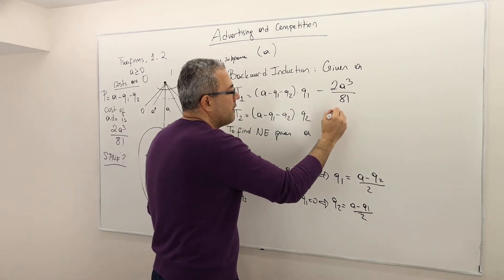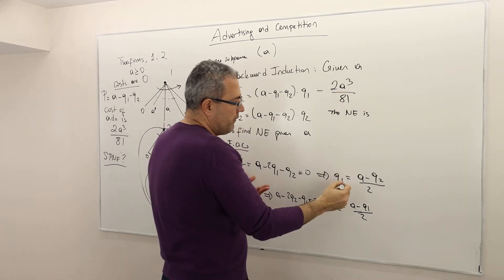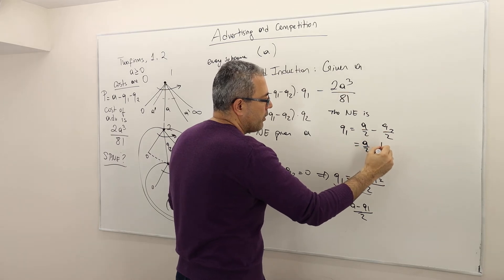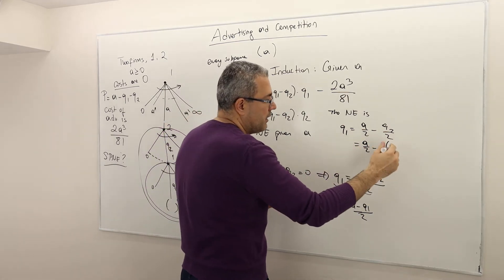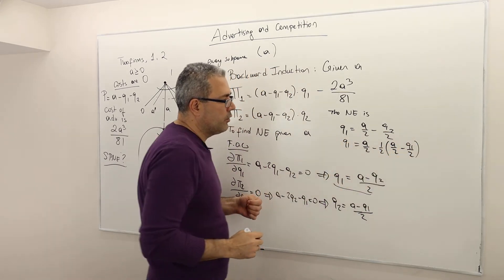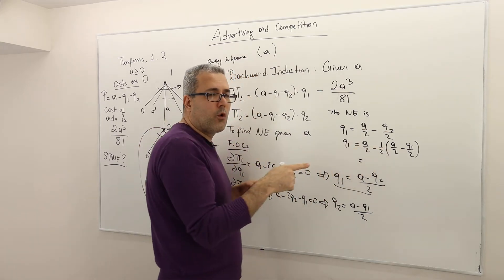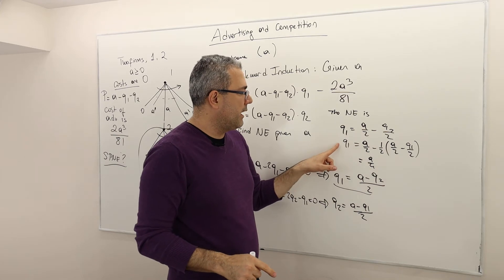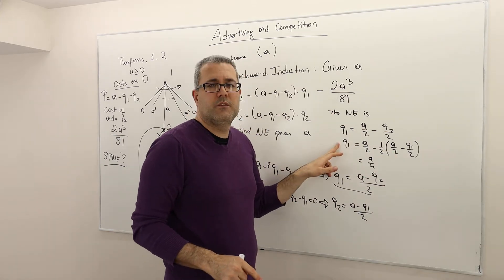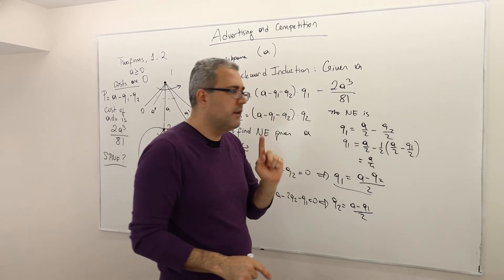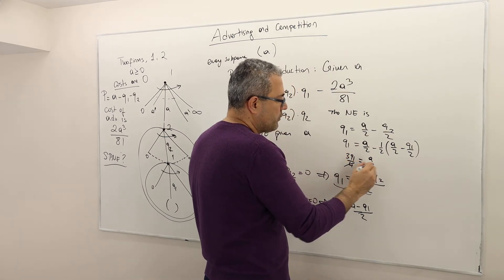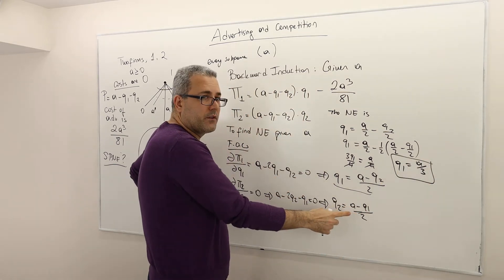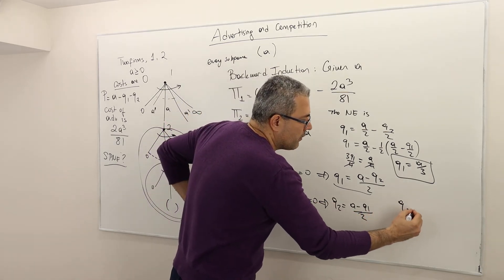Solving these simultaneously: substituting Q2 = (A − Q1)/2 into Q1 = A/2 − Q2/2 gives Q1 = A/2 − (A − Q1)/4 = A/4 + Q1/4, so 3Q1/4 = A/4, meaning Q1 = A/3. Plugging back in gives Q2 = A/3 as well. So this is the standard Cournot-Nash equilibrium solution: Q1* = Q2* = A/3.